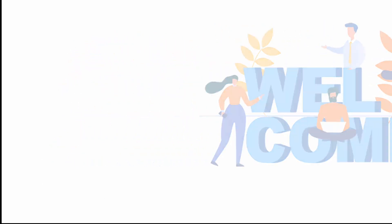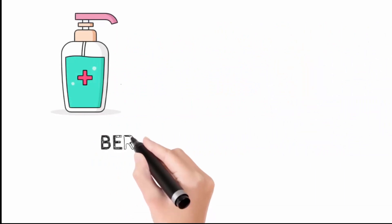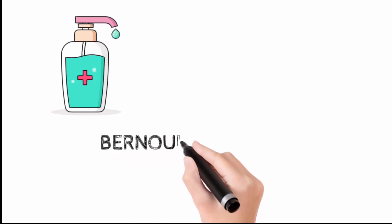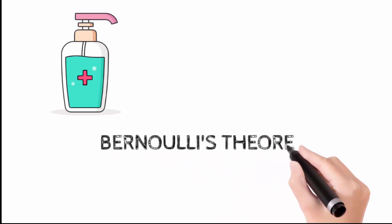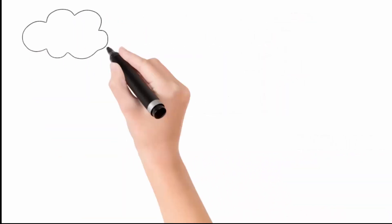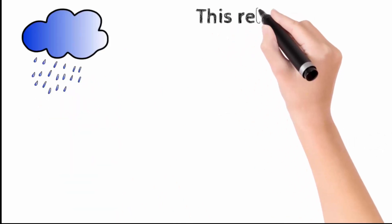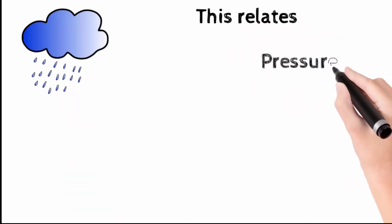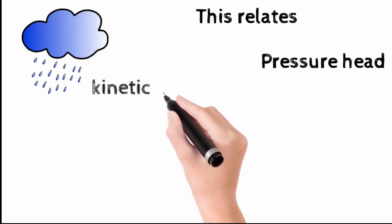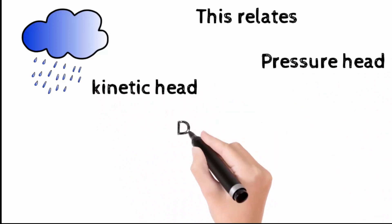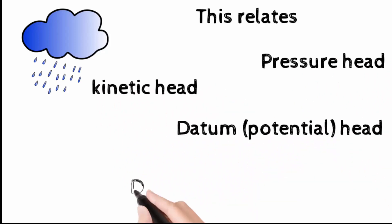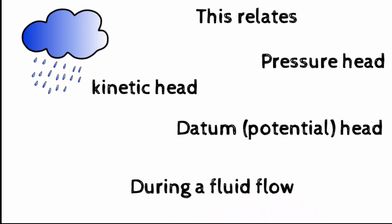Welcome everyone, this is a small video which is going to explain about Bernoulli's theorem. Bernoulli's theorem basically relates three energy: the first one is the pressure head, the kinetic head, and the datum head which is the potential head, which takes place during a flow.